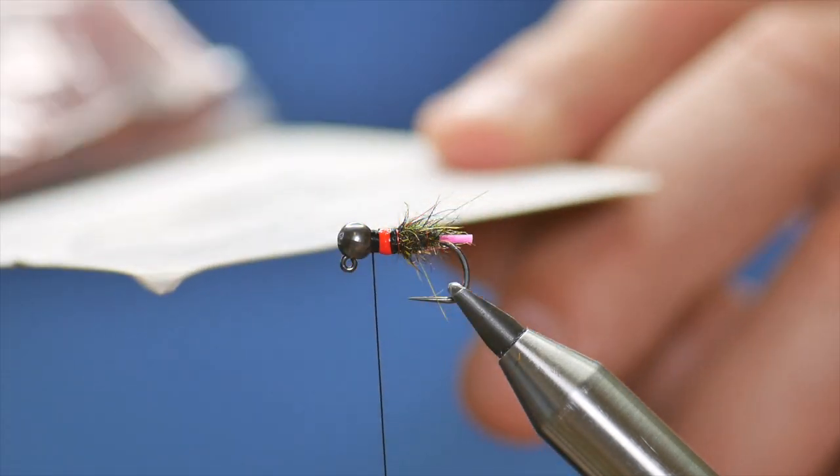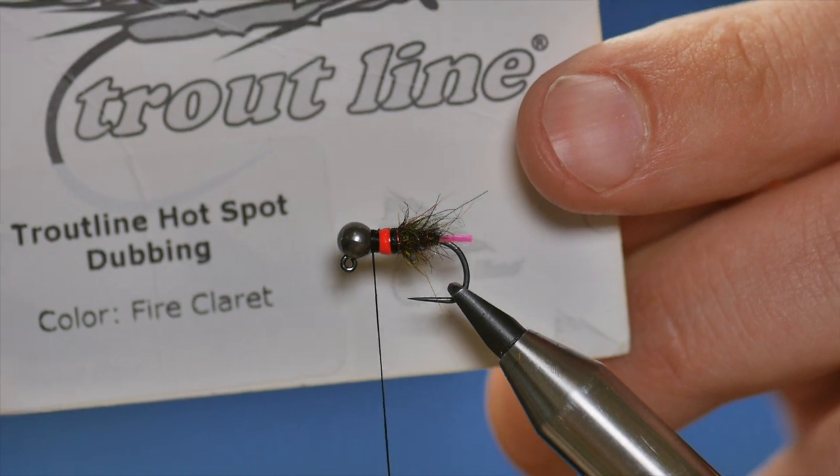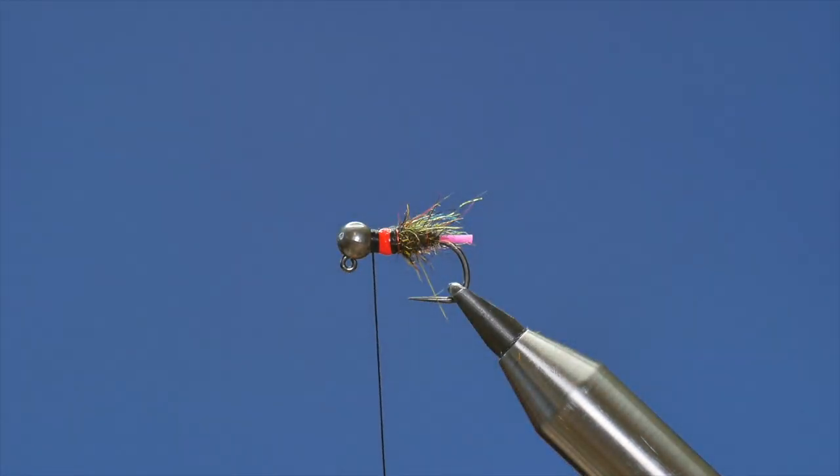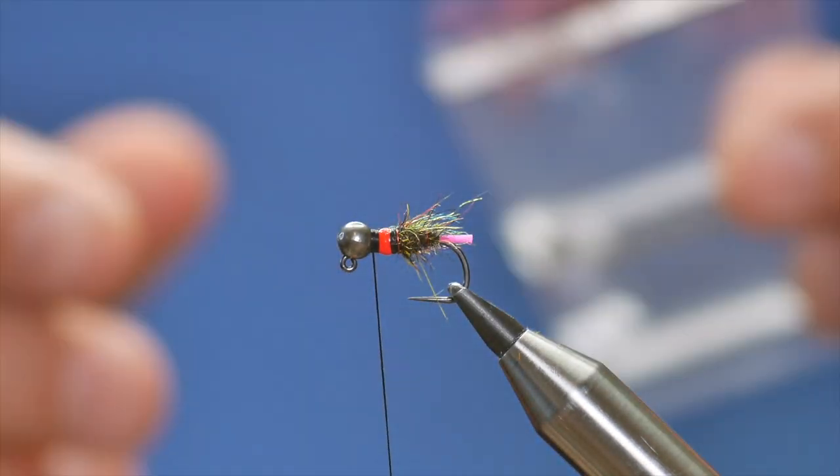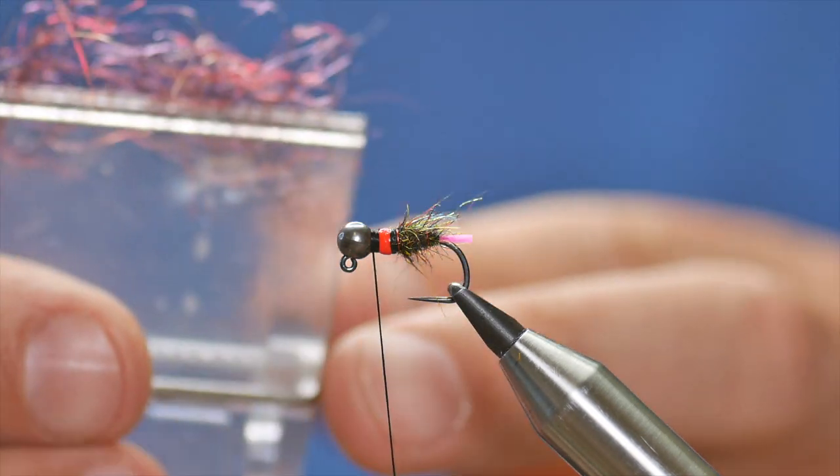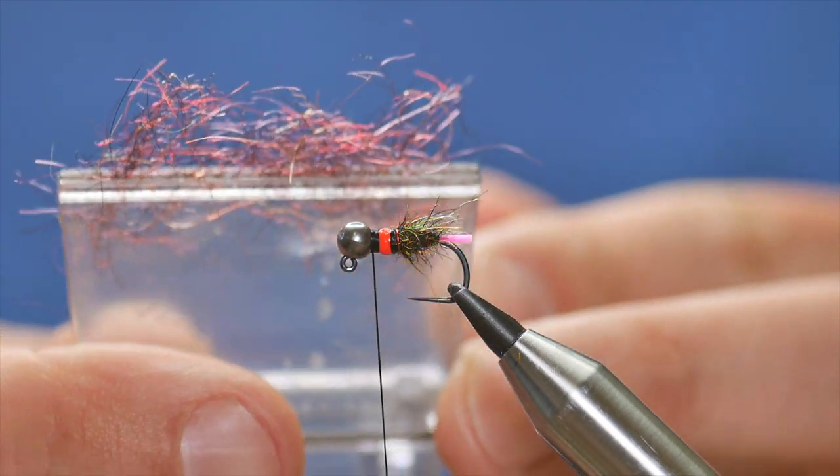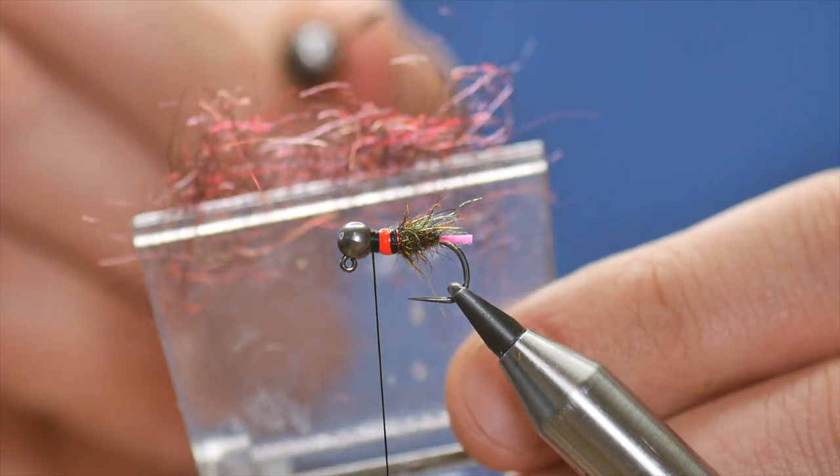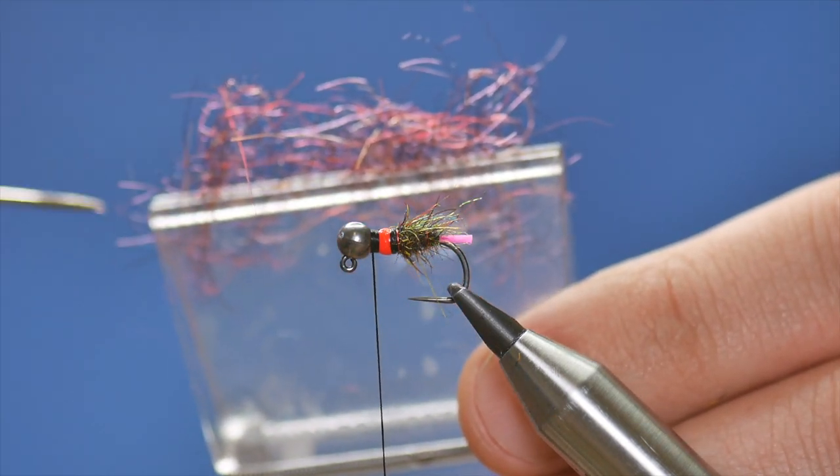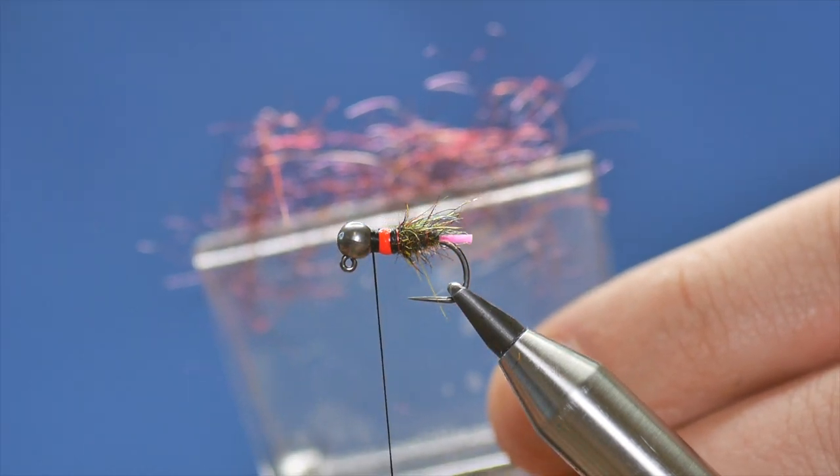This is some of the trout line. And, this is the hot spot dubbing. And, it's in Fire Claret. I've already taken a pinch of this. And, I've got it in my clip here. And, as you can see, I've done it in a way that it's quite sparse and long. And, that's what I want.